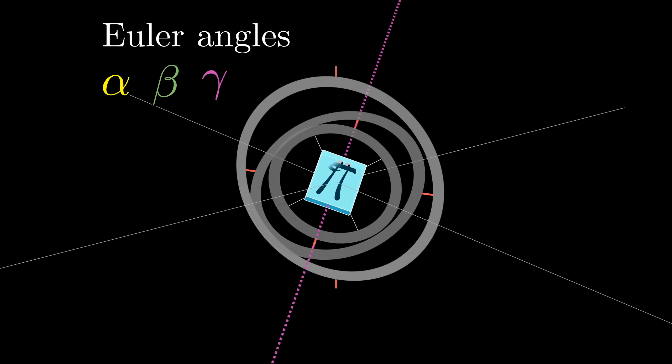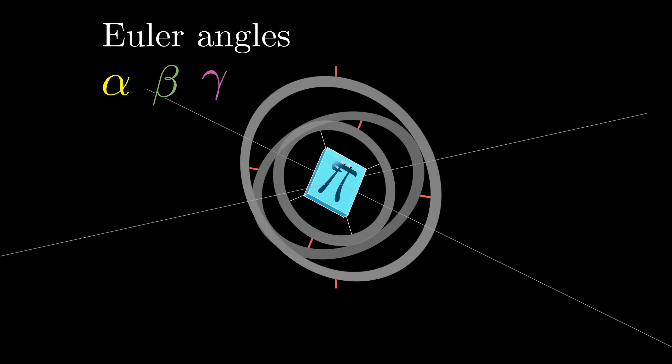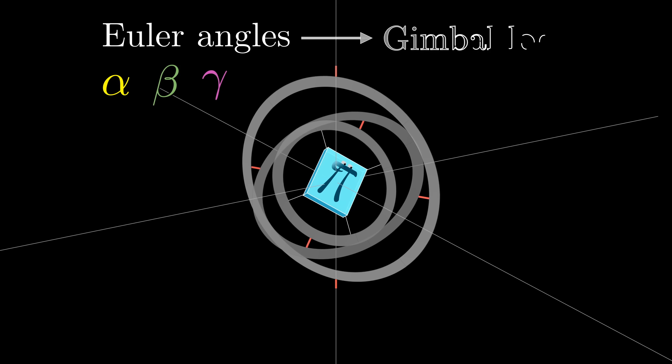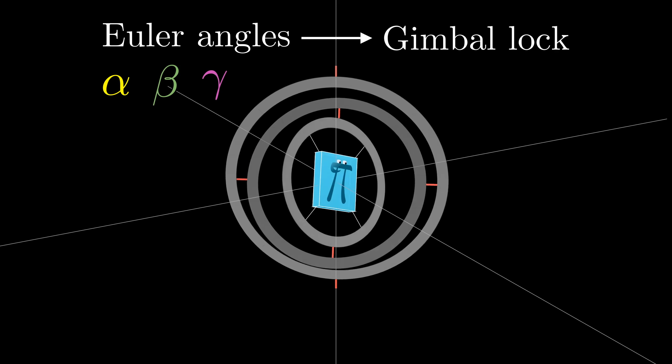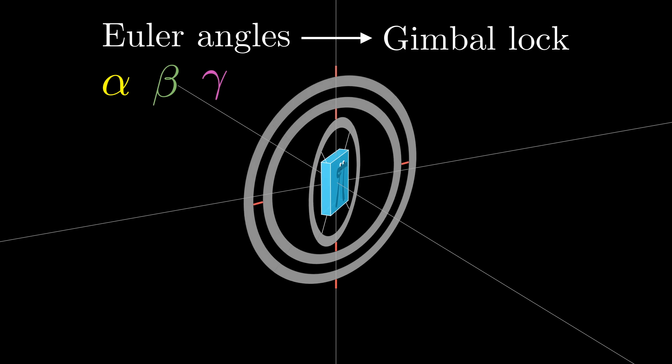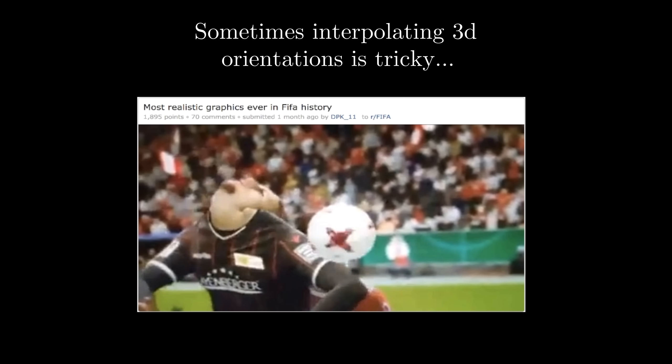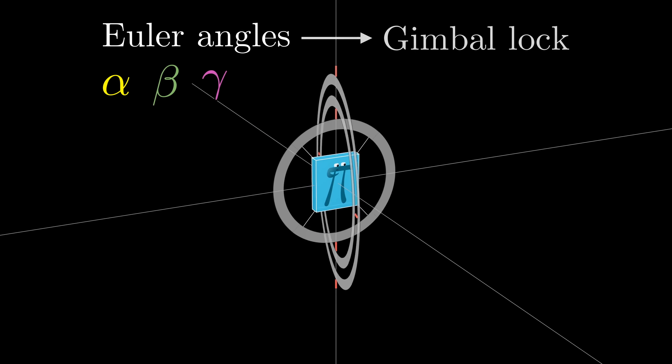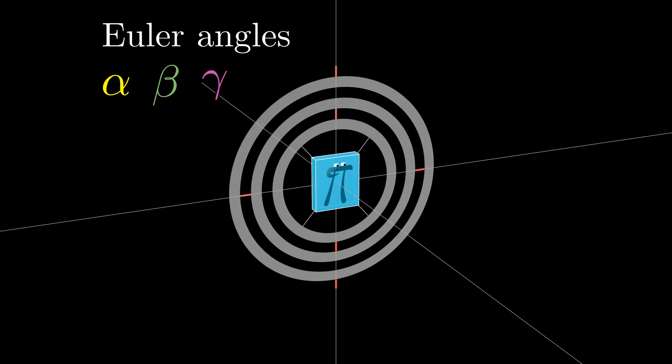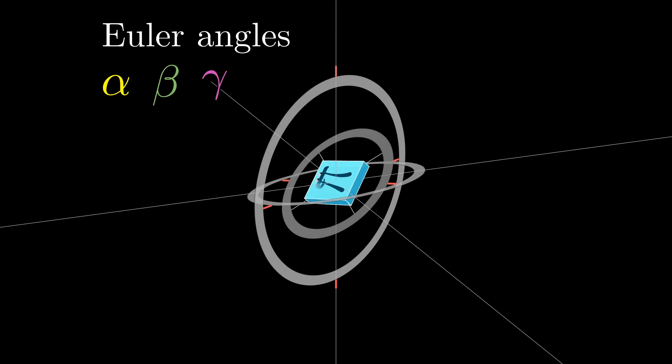And this mostly works, but one big problem is that it's vulnerable to something called Gimbal Lock, where when two of your axes of rotation get lined up, you lose a degree of freedom. And it can also cause difficulties and ambiguities when trying to interpolate between two separate orientations. If you're curious for more of the details, there are many great sources online for learning about Euler angles and Gimbal Lock, and I've left links in the description to a few of them.